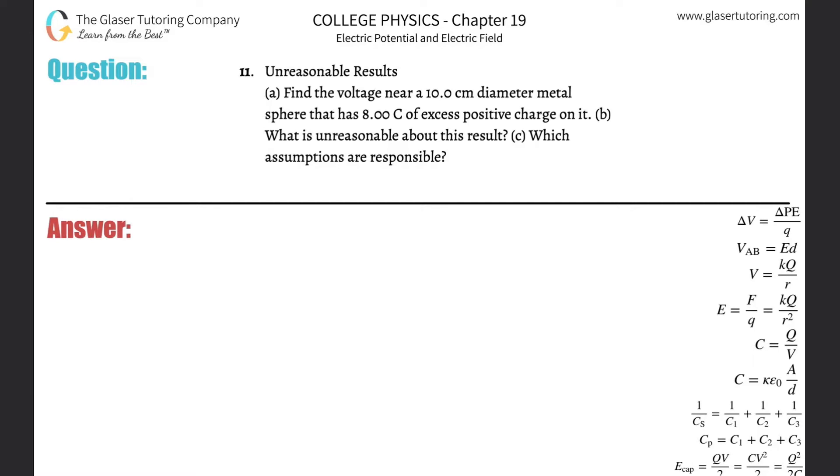Number 11, unreasonable results, letter A: Find the voltage near a 10 centimeter diameter metal sphere that has 8 coulombs of excess positive charge on it. Alright, so we're gonna do this fast.